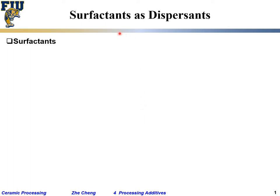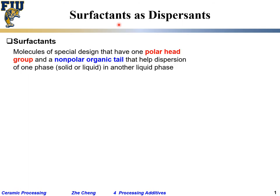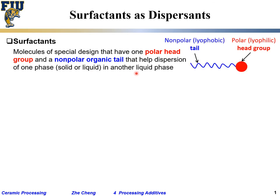This first topic is surfactant — soap or something similar — rather than small molecules. They are molecules of special design that contain a polar head group (sometimes called a polar head group) and a non-polar tail, quite often an organic tail, that helps disperse one phase in another liquid phase or solvent. Typically we have one polar head group and a long organic tail.